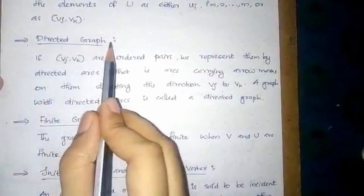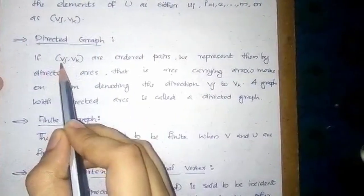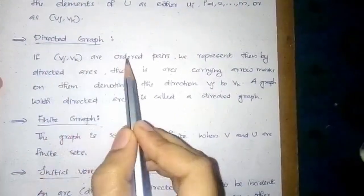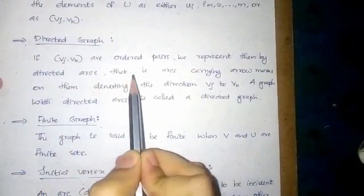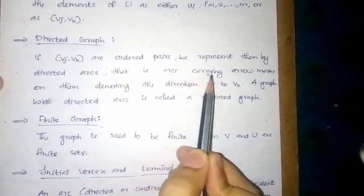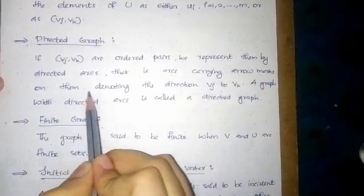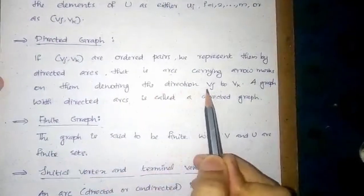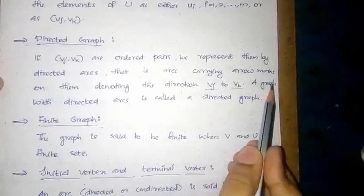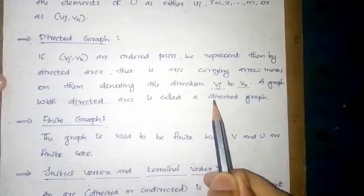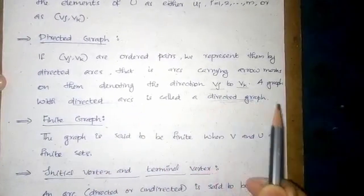Directed graph. If Vj, Vk are ordered pairs, we represent them by directed arcs — that is, arcs carrying arrow marks on them denoting the direction Vj to Vk. A graph with directed arcs is called a directed graph.